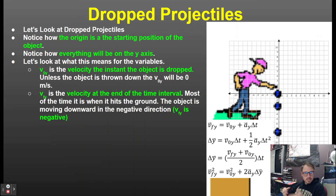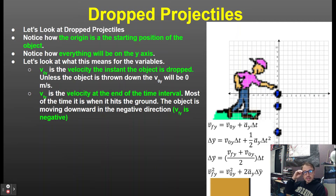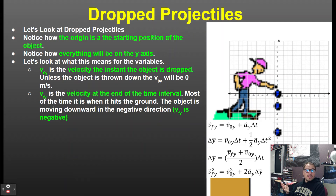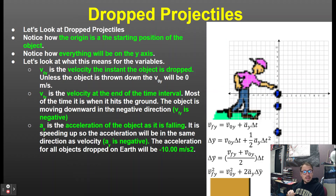If you drop an object from a height and it hits the ground, the object is moving in the downward direction — the negative direction — so the final velocity is going to be negative. In fact, any velocity along this path going down, with the exception of the initial velocity, is going to be negative.